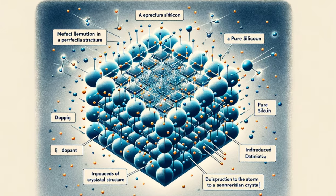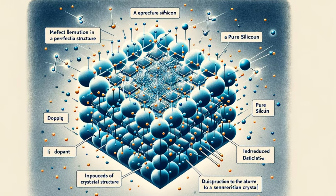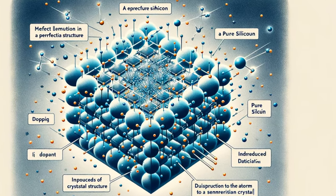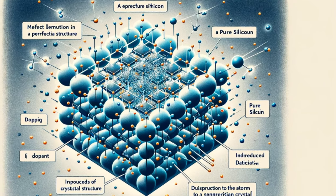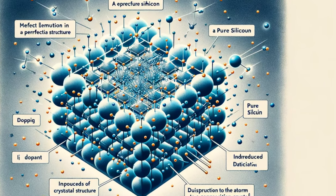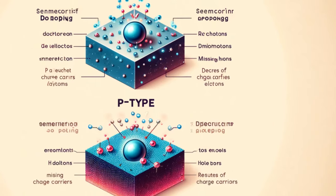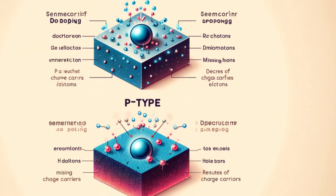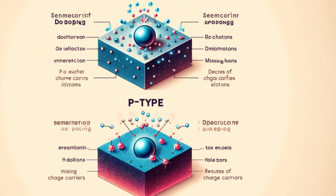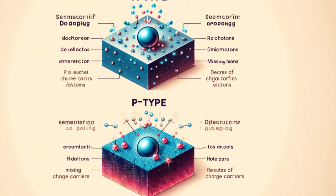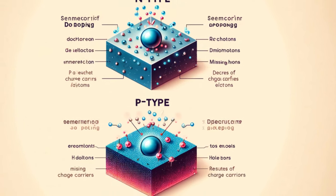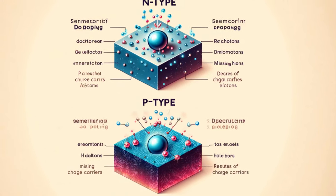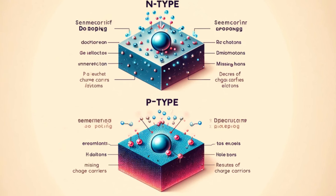Doping involves adding a small amount of atoms from a different element to the semiconductor crystal. These impurities can either donate extra electrons, known as N-type doping, or create holes where electrons are missing, known as P-type doping.